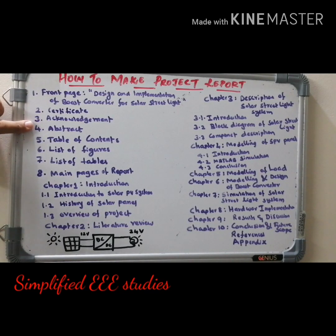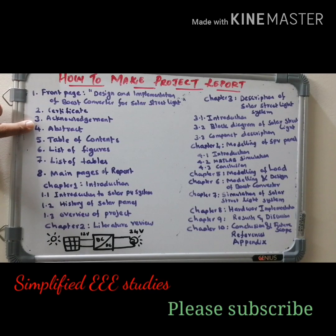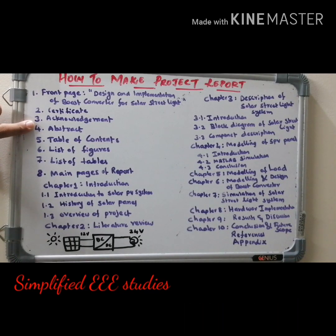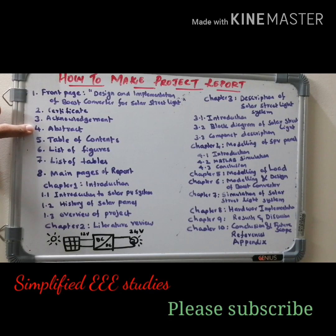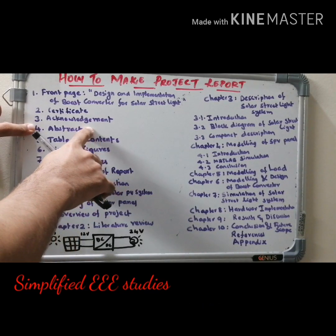Then comes the abstract. In the abstract, I need to mention what I have done. First, the importance of renewable energy sources. Second, the importance of solar energy. Then the importance of the DC-to-DC boost converter. Then one or two lines about the main thing done in the project — mainly, I have designed a DC-to-DC boost converter. Within 10 lines, I need to conclude the abstract. Maximum 10 lines.